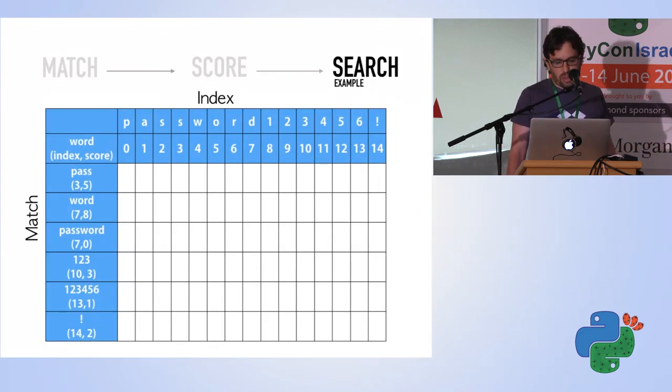We can use something more efficient, which is dynamic programming. We just draw a table. We put on the x-axis the indexes—as you can see here, I also put the password. We put on the y-axis all the matches. I also added here the last index of the match and the score, so you can see it.